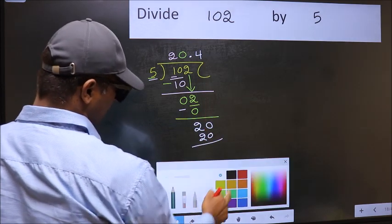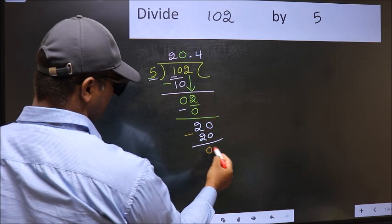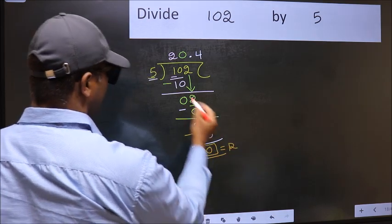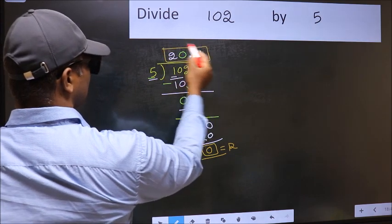Now you should subtract. 20 minus 20, 0. So this is our remainder, and this is our quotient.